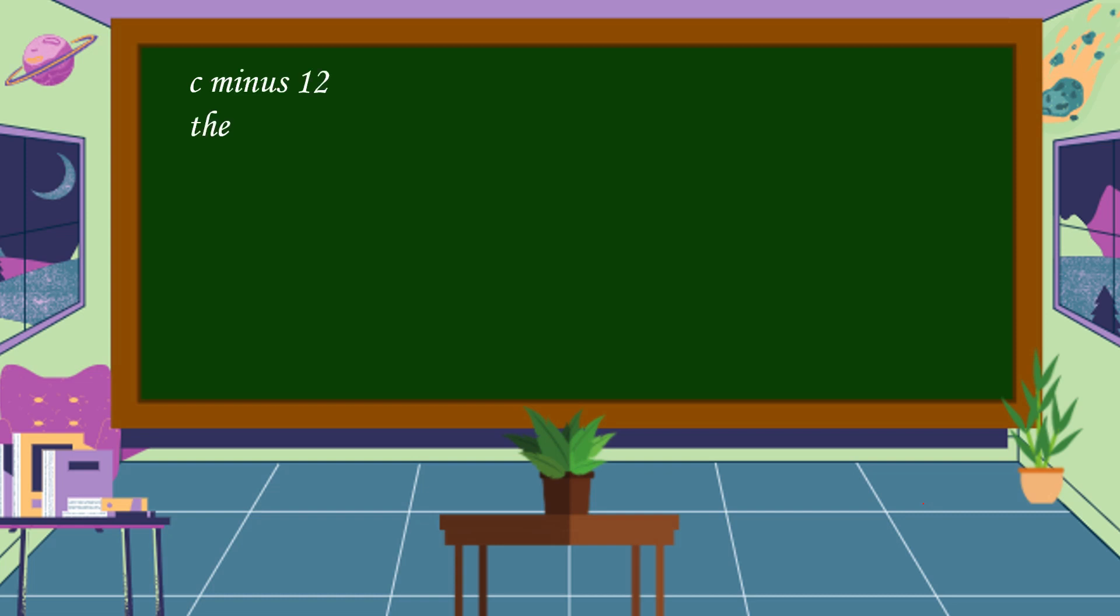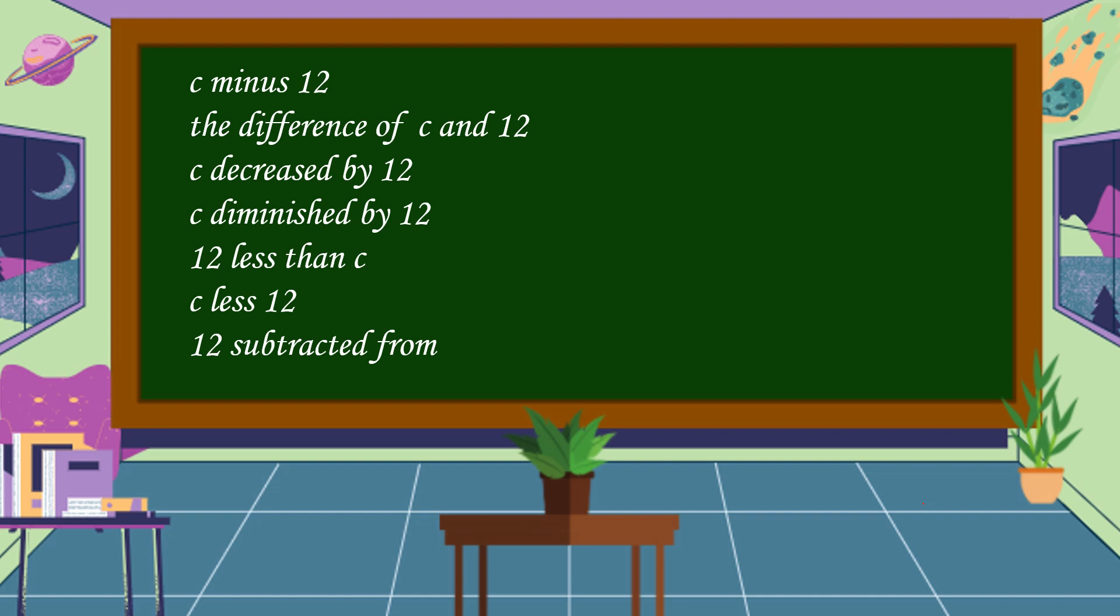C minus 12, the difference of C and 12, C decreased by 12, C diminished by 12, 12 less than C, C less than 12, 12 subtracted from C. The algebraic expression of all these phrases is C minus 12.